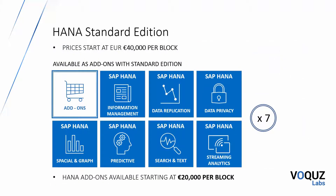The HANA Standard Edition is sold on a tiered pricing model with prices starting at €40,000 per 64 gigabyte block. With Standard, the advanced features are not included but can be purchased as add-ons with prices starting at €20,000 per 64 gigabytes. If your organization will need more than three or four add-ons, then Enterprise Edition might work out to be more cost effective.